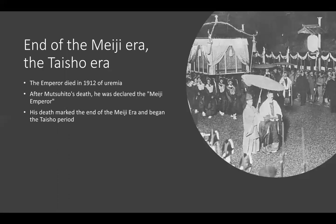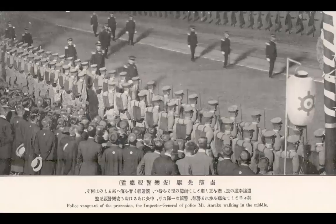At the end of the Meiji era, it ended when the emperor died in 1912, and after his death he was declared the Meiji emperor, starting the trend of every emperor being named after their era. His death marked the end of the Meiji era and began the Taisho period. You can see a picture of the emperor's funeral procession, and another picture of the funeral.